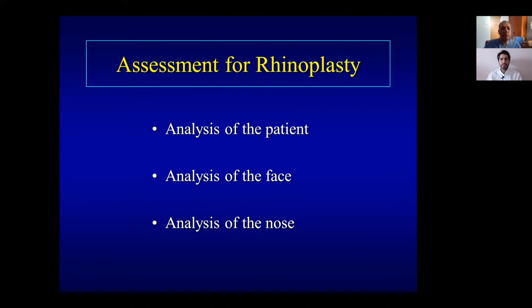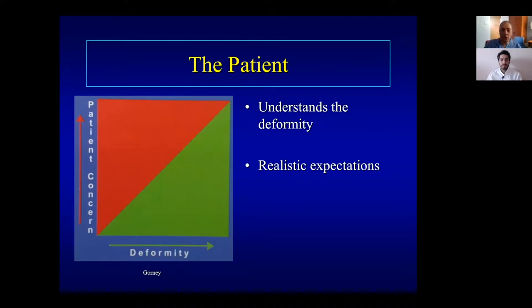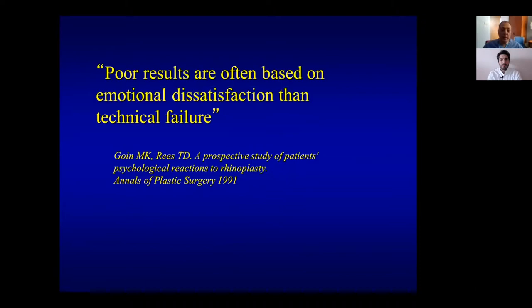This is an old graph created by Corny, a plastic surgeon, showing two colors. The red is bad, the green is a good area. If a patient has very high concern — very upset and worried about the nose even if it has a small problem — that's a patient you don't want to operate on. A patient with a clear deformity who is unhappy is a good patient. There are many studies showing that poor results are based on emotional dissatisfaction rather than technical failure.